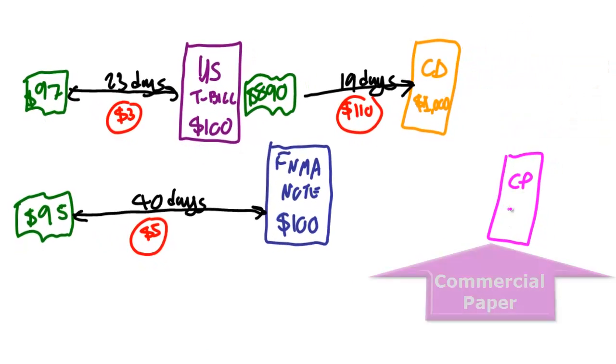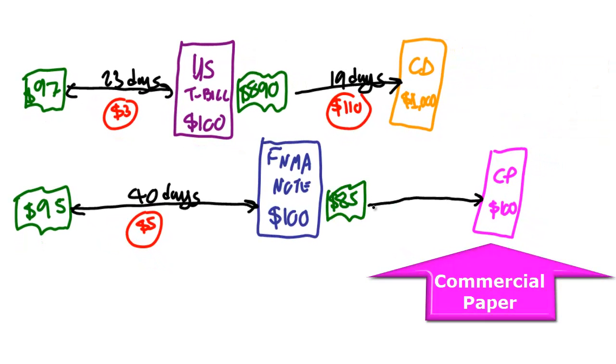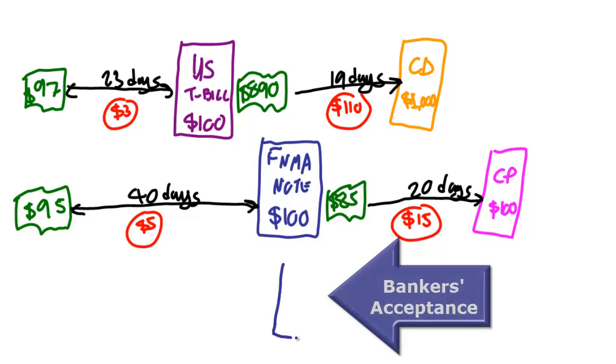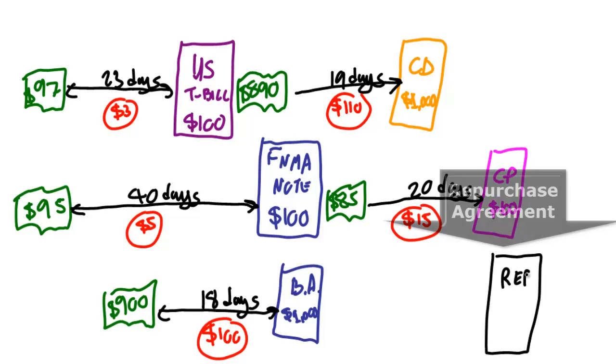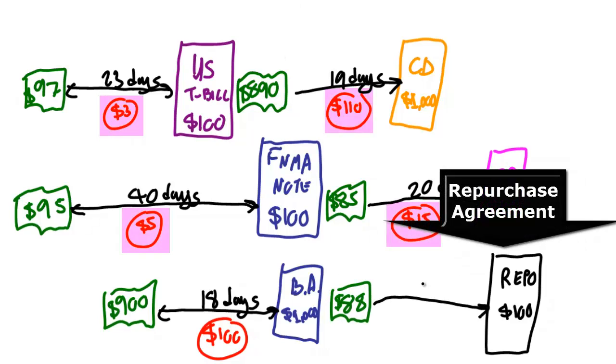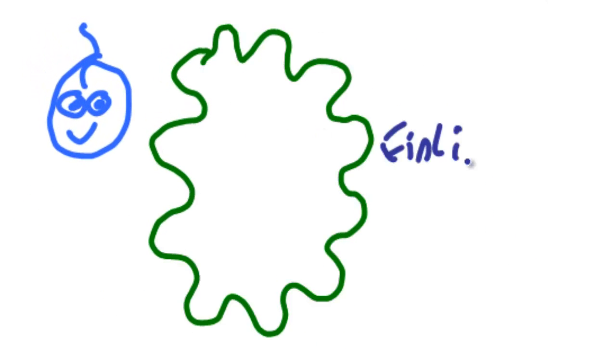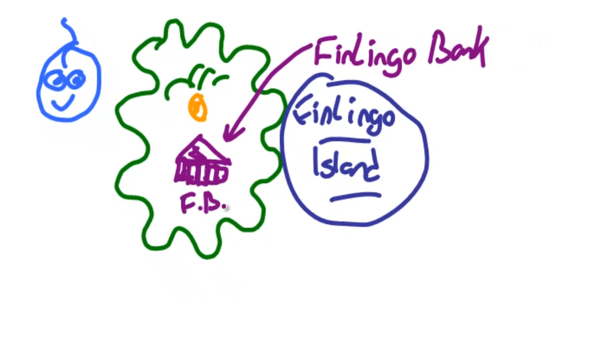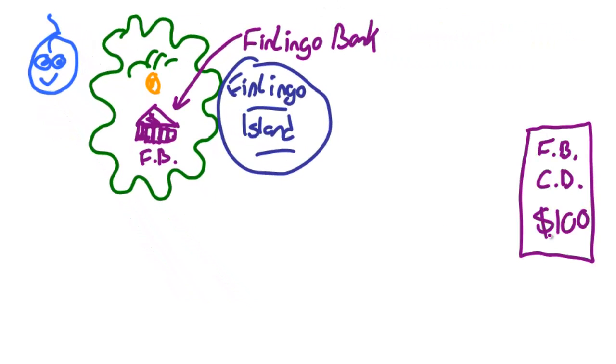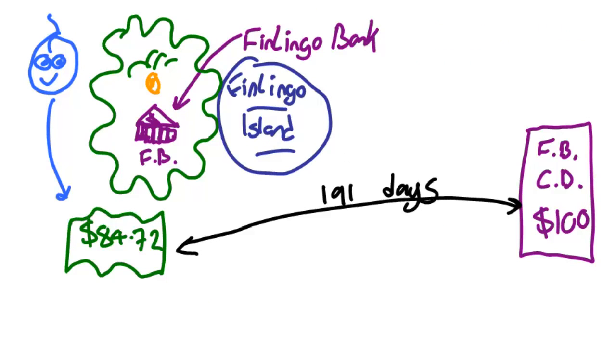The money markets mostly deal in paper IOUs with simple face values to be delivered in less than a year. People buy and sell these IOUs for less than the face value, and the difference between the two numbers is the potential profit if the IOU is honored at the end. Here we've got investor Sean, who's paying $84.72 for a finlingo bank certificate of deposit, which is going to deliver $100 in 191 days' time to whoever presents it to the bank.